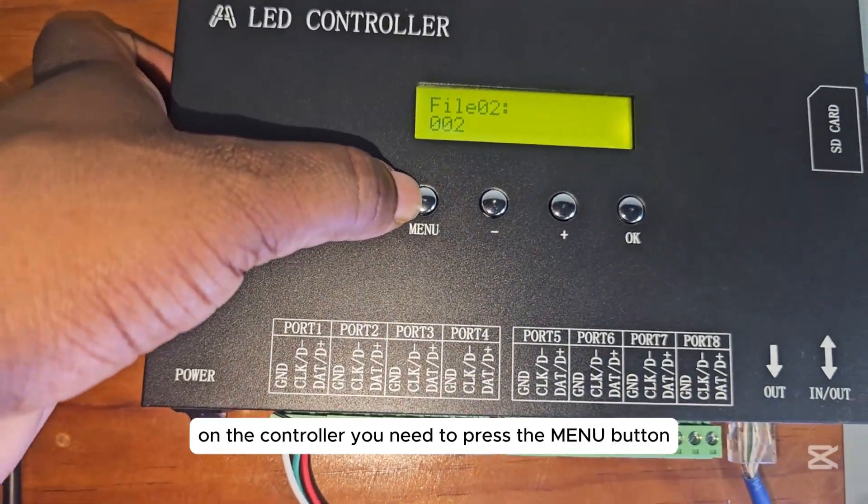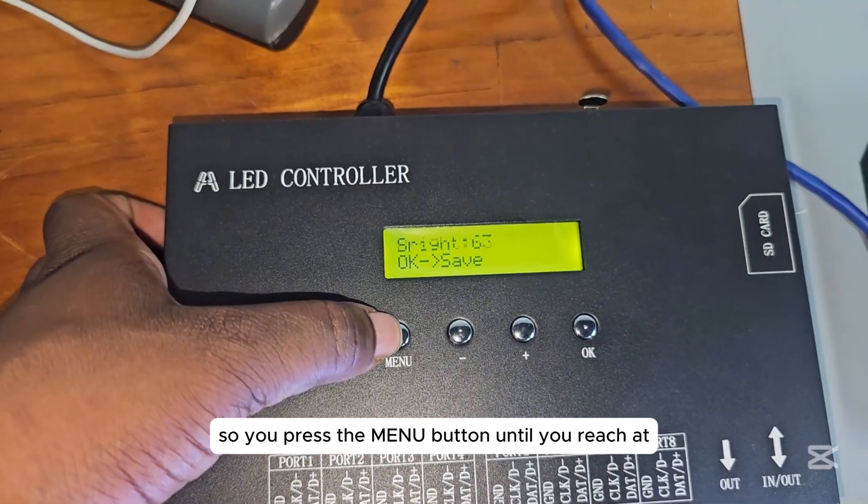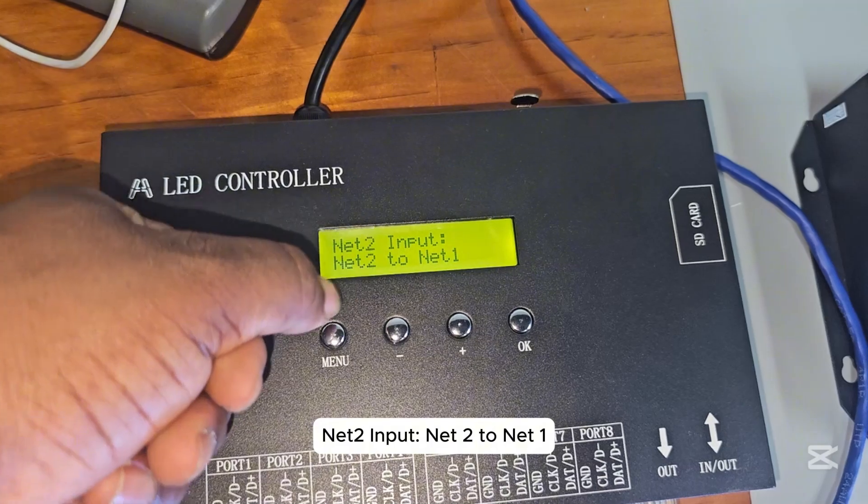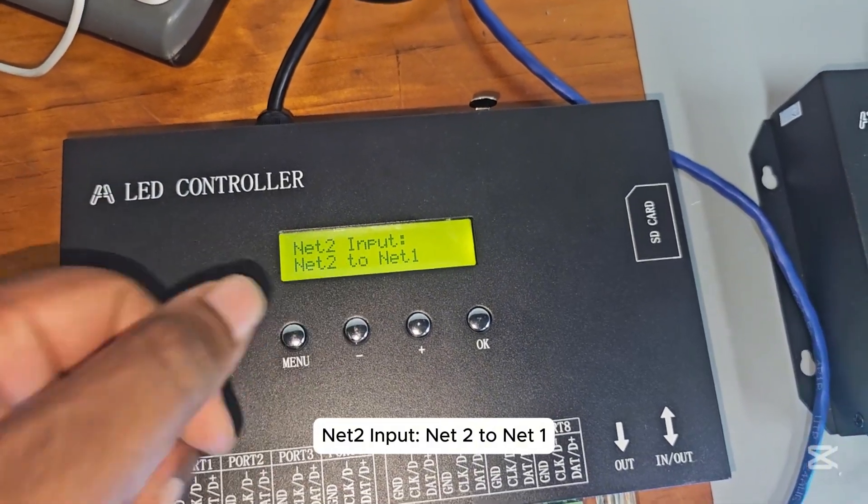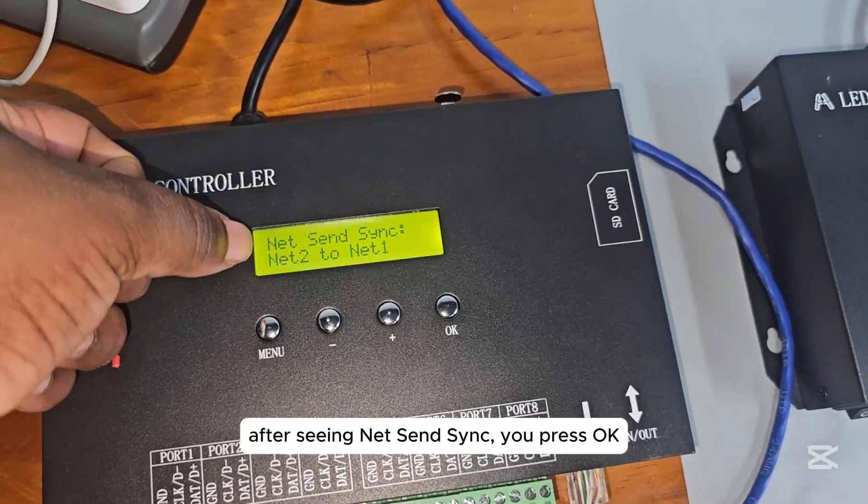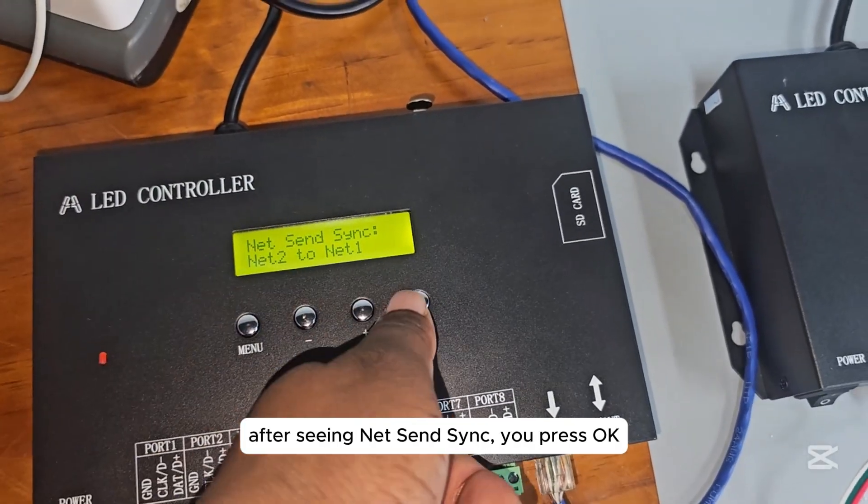On the controller you need to press the menu button. Press the menu button until you reach net 2 input, net 2 to net 1, and press the plus to do the syncing. After seeing net send sync, you press ok.